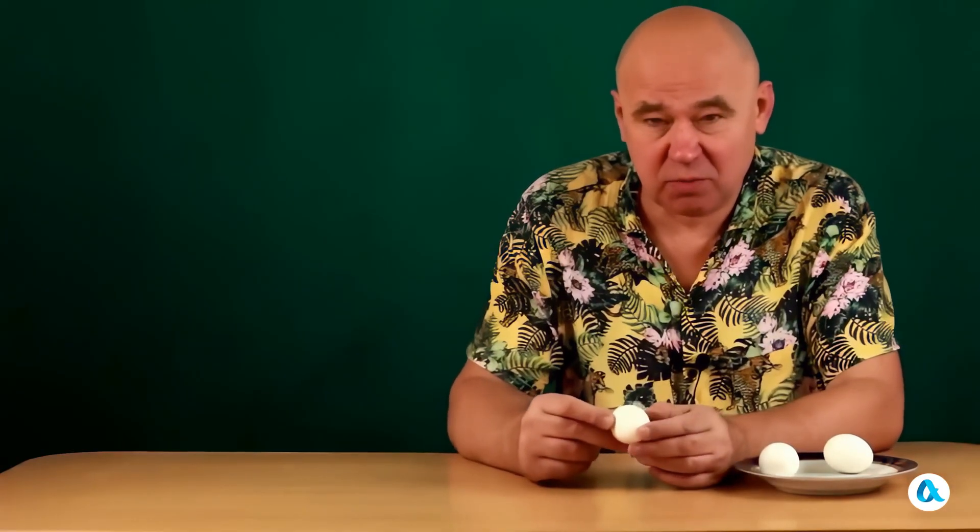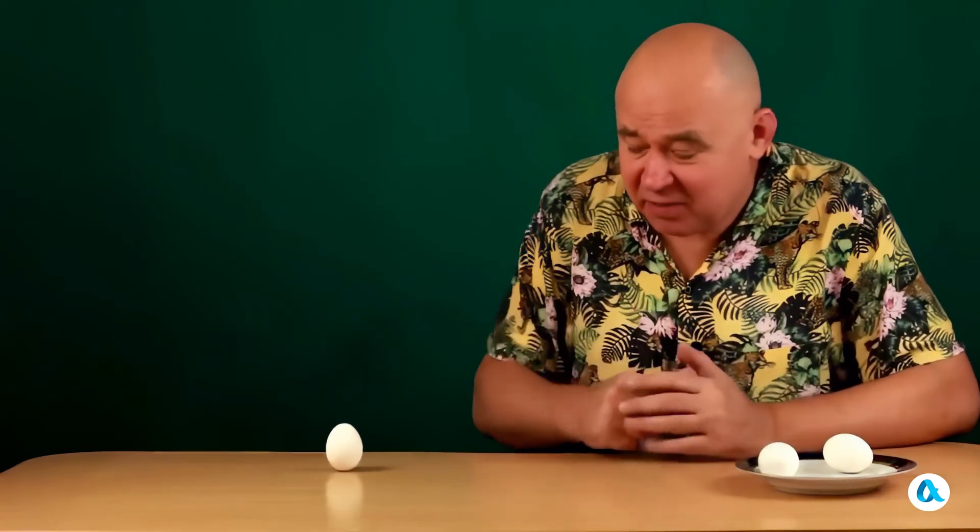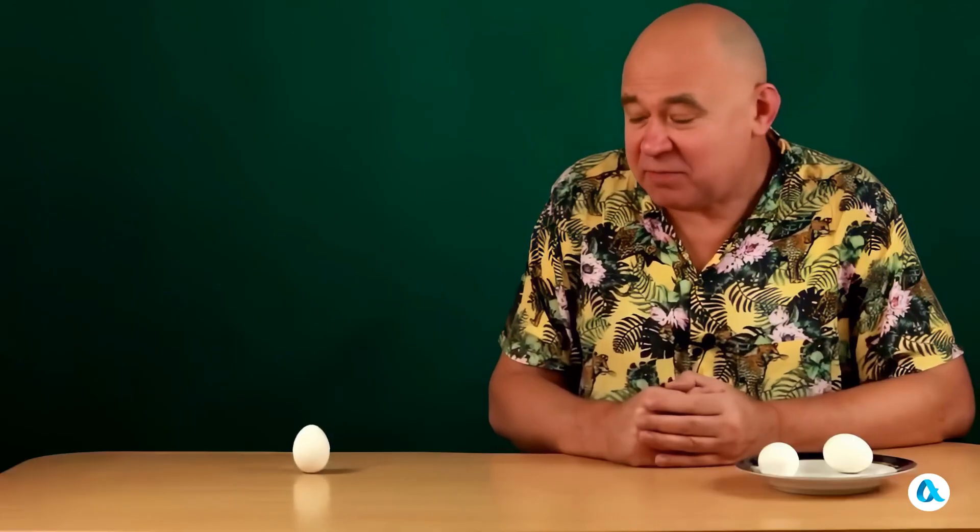To do this experiment, you need to take an egg, preferably hard-boiled so that the internal viscous forces don't slow it down, and spin it forcefully. And as a result, we see the egg stand up on its end.